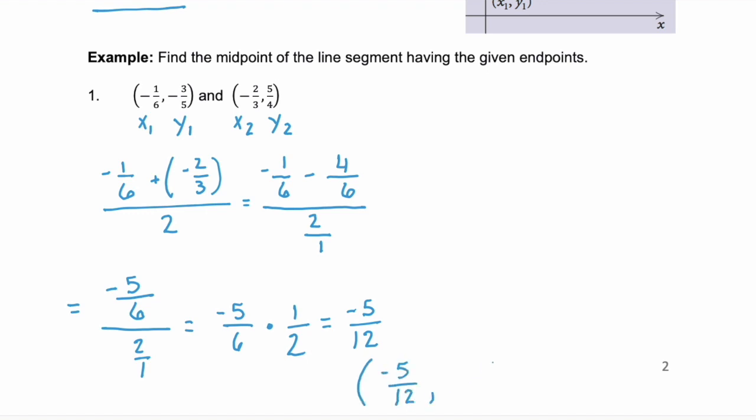And we're going to find the y value. So our y value is going to be our y1, negative 3/5, plus our y2, 5/4. And again, that's divided by 2. Now, to simplify that numerator, we need to have a common denominator. And the common denominator between 5 and 4 would be 20.